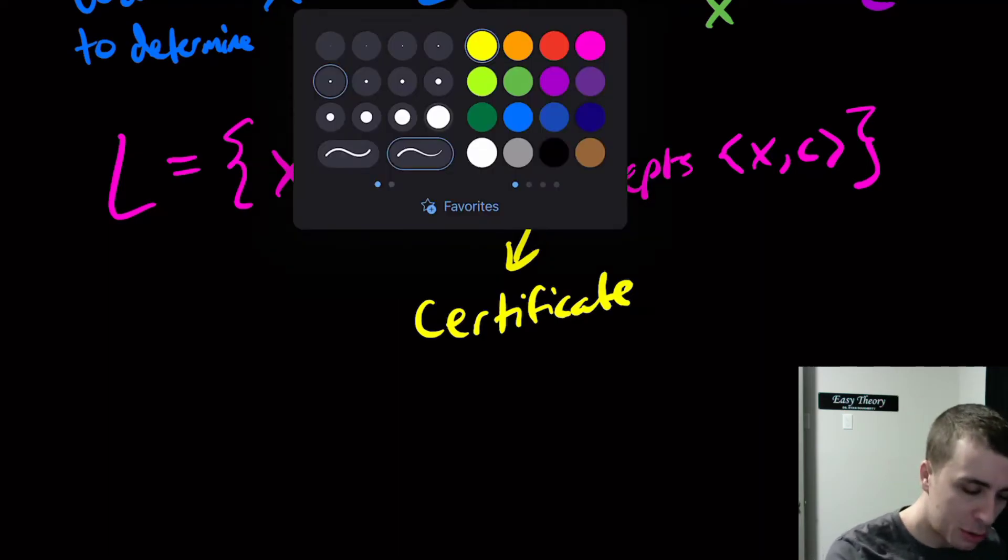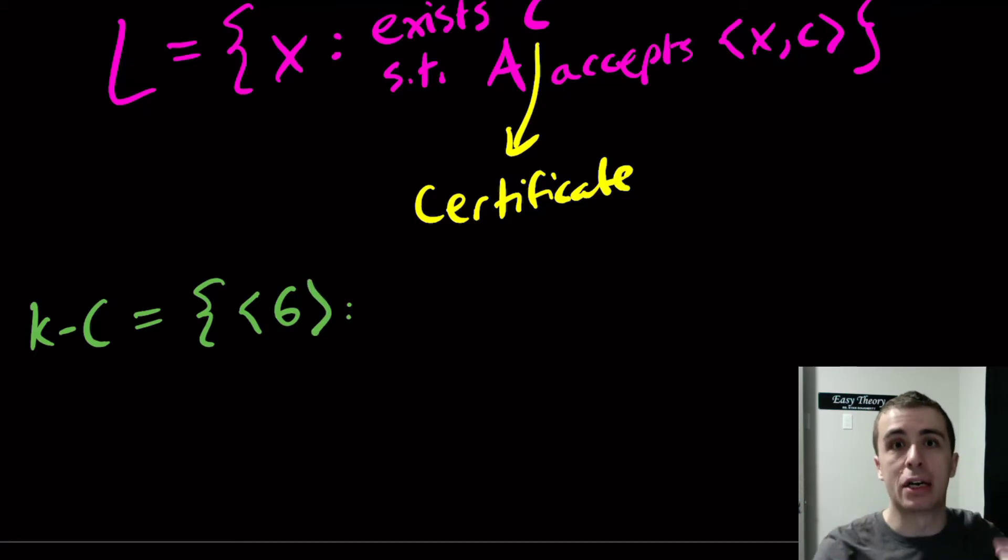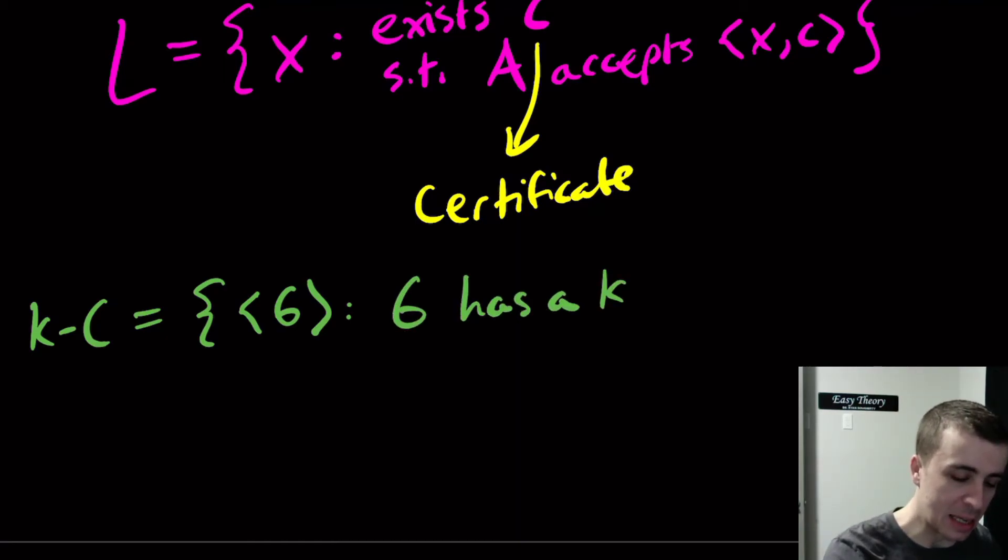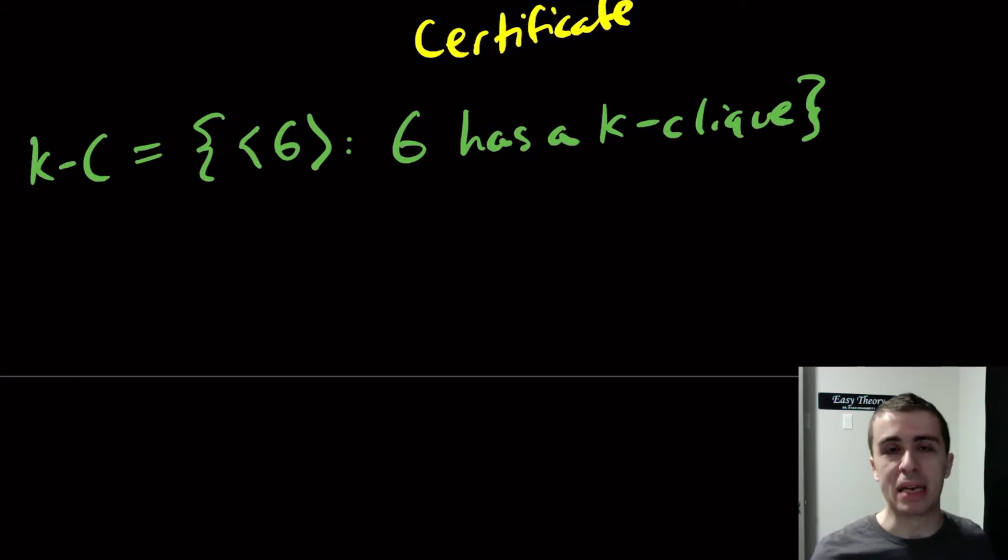Let's do an example. I'm going to define the language K-clique, KC, so I don't have to write it over and over. Here is going to be all graphs, and remember angle brackets means encoding it as a string, but that's less of an issue. It's the graph G such that G has a K-clique. What would a certificate be? What additional info can I provide to you in order to make this easier?